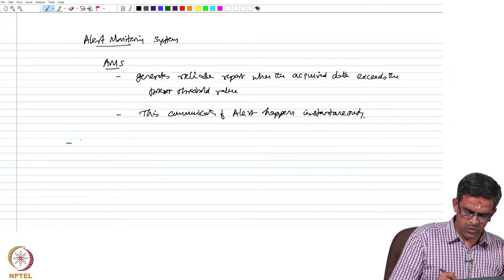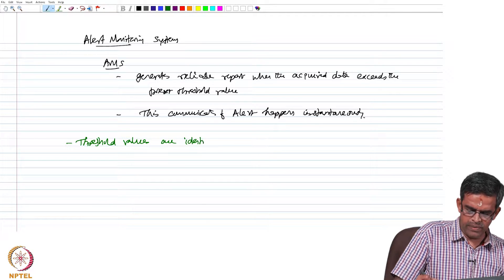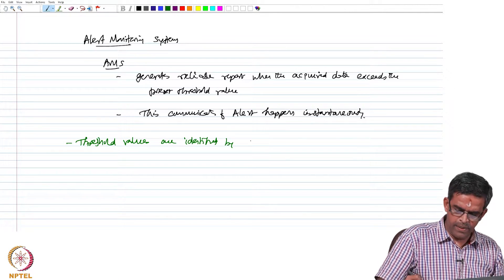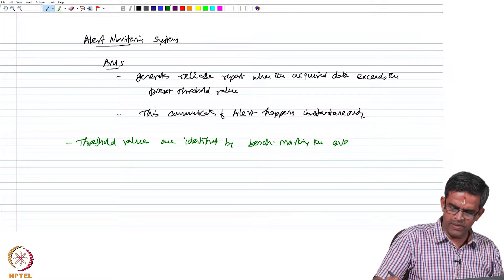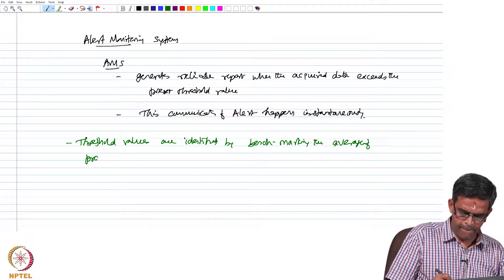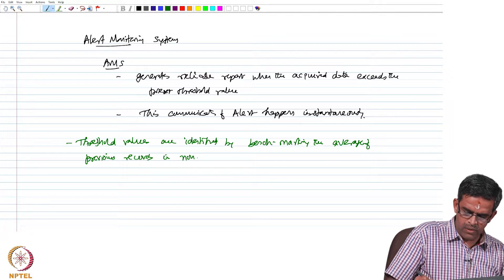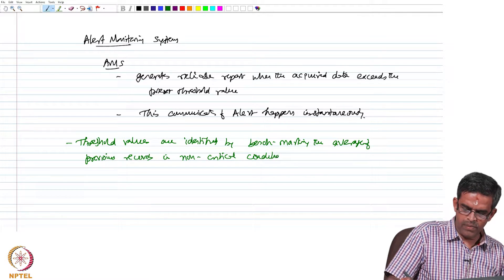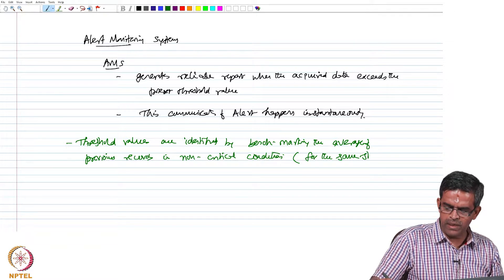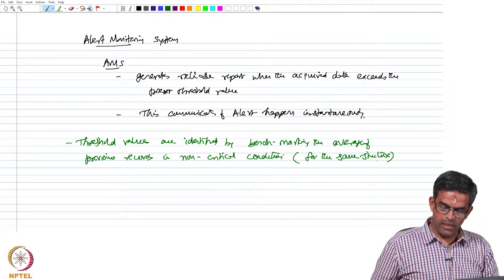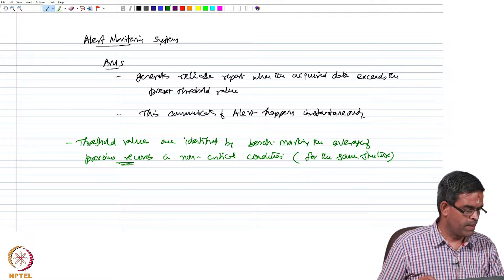How do you identify the threshold values? The threshold values are identified by benchmarking the average of previous records in non-critical condition for the same structure. You keep on acquiring the data in a non-critical stage, and the average of the previous records will be considered as a threshold value.